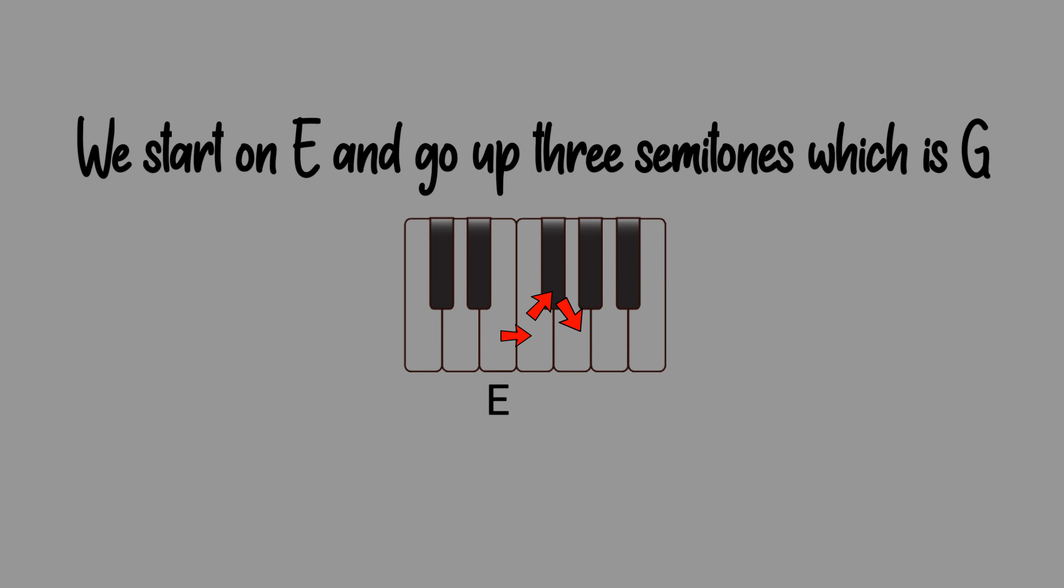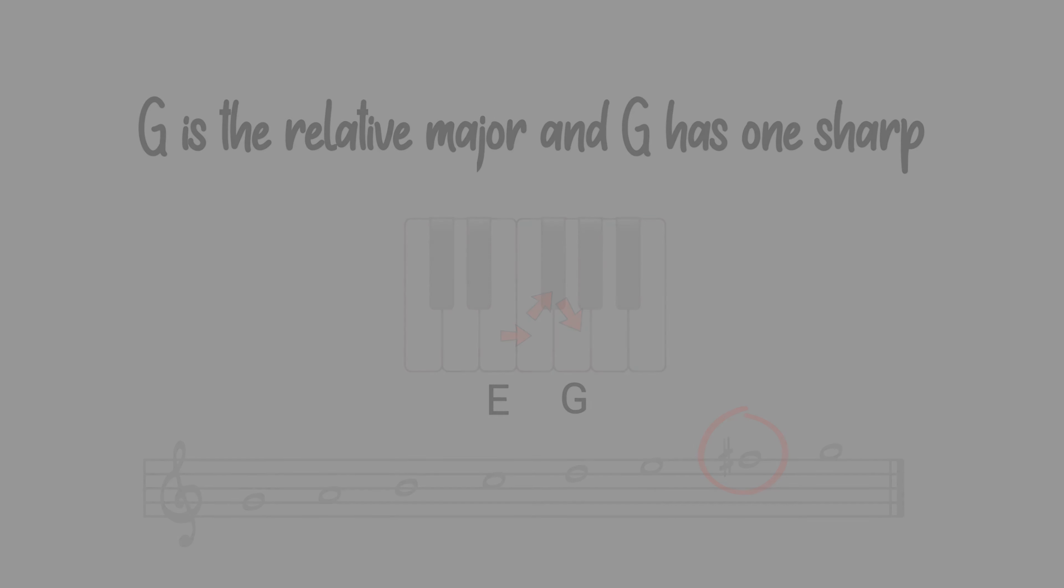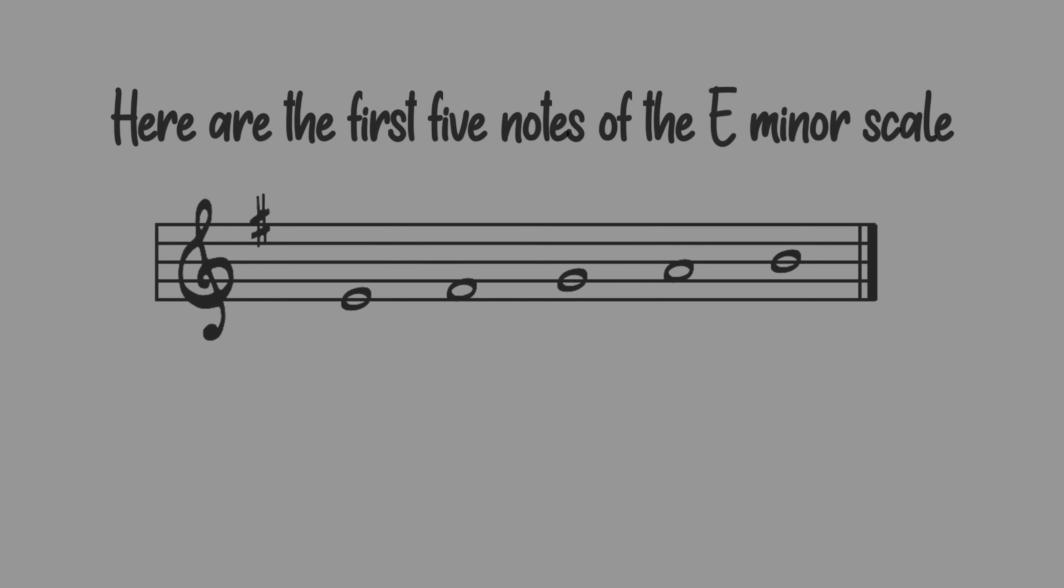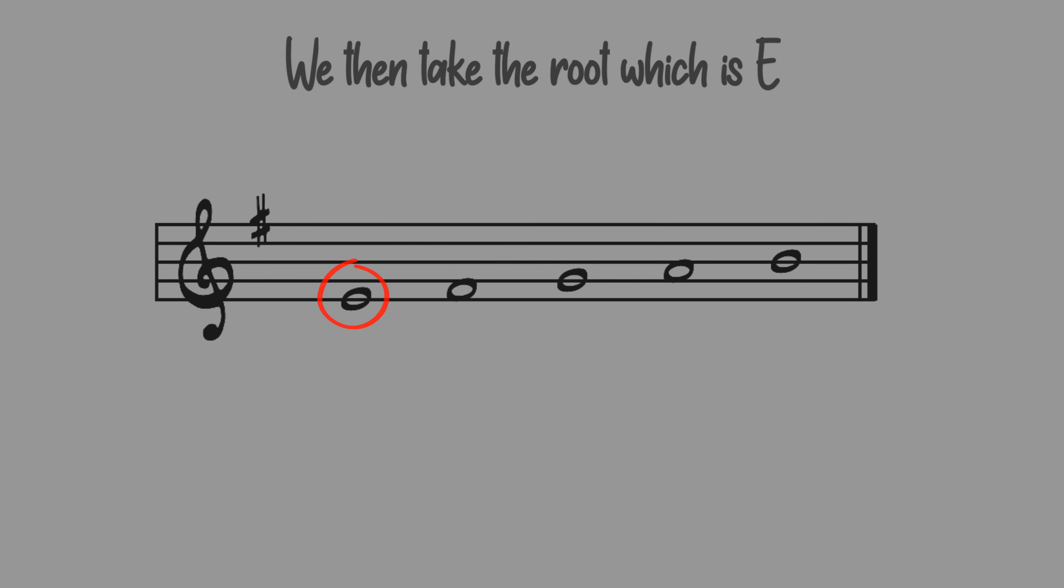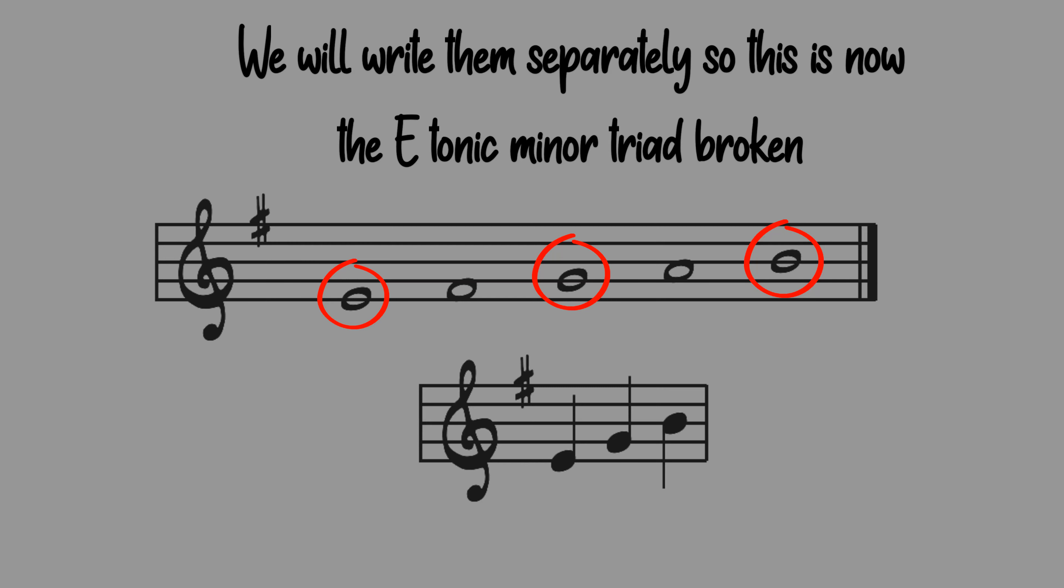We start on E and go up three semitones which is G. G is a relative major and G is one sharp. Once we know the relative major we go back to E. Here are our first five notes of the E minor scale. We then take the root which is E and the third which is G and the fifth which is B. We will write them separately so this is now the E tonic minor triad broken.